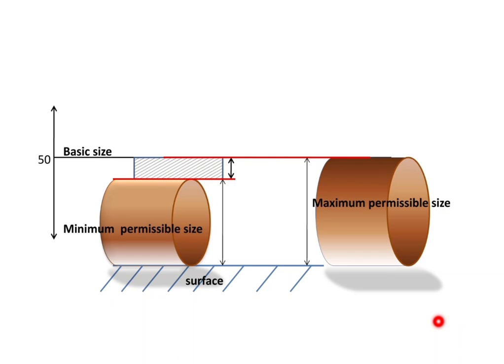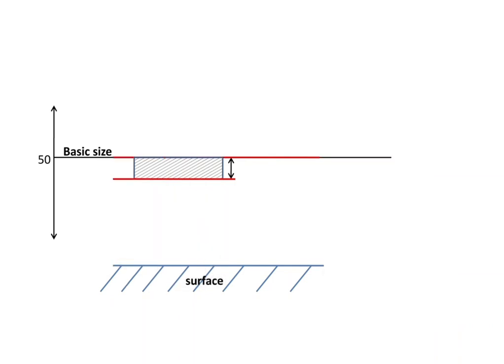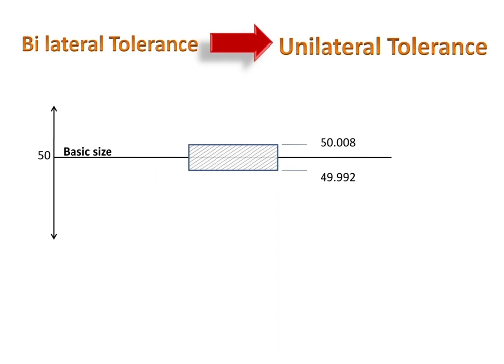Now we will concentrate on the tolerance zone only. This is the case of bilateral tolerance system, where the tolerance zone is partially above the basic size and below the basic size. You can see the basic size, and above it part of the tolerance zone is available, and below it also part of the tolerance zone is available.